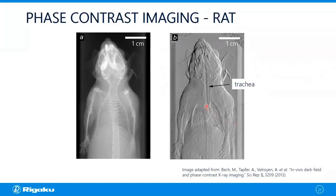Specifically, we can see the trachea pretty well, and we can identify some other internal structures in the head. We can also see the lungs quite well, the edge of the lungs, and some things in the abdomen. So it's quite a powerful technique.